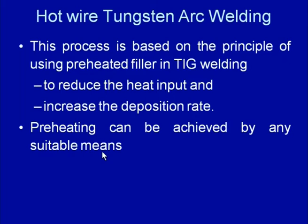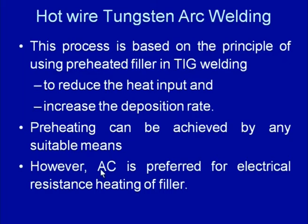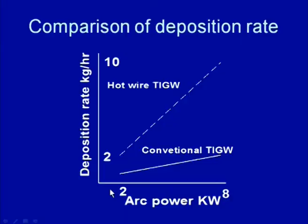For preheating the filler wire, electrical resistance heating by supplying AC is commonly used, because when DC is used it sometimes causes the problem of arc blow. Comparing the hot wire GTAW process and the conventional GTAW process under identical welding arc conditions, a much higher deposition rate can be achieved by the hot wire GTAW process.